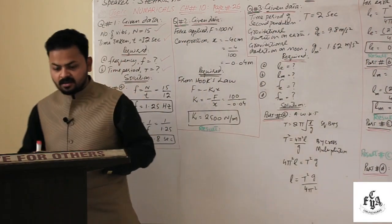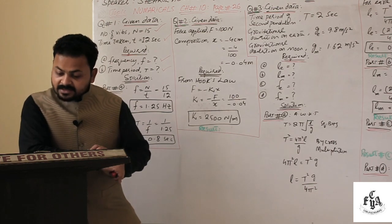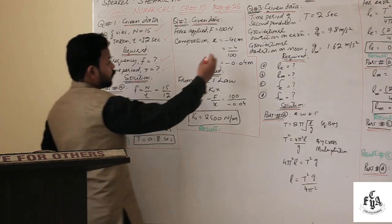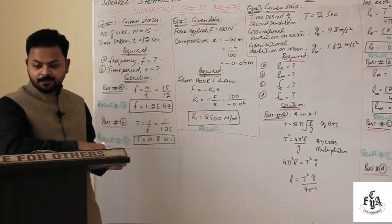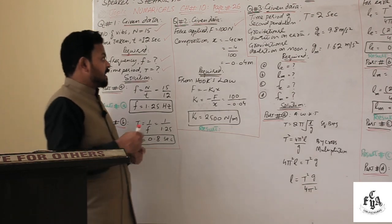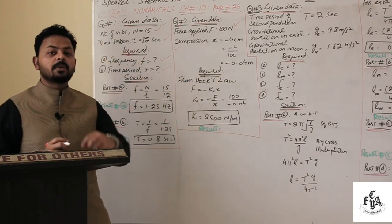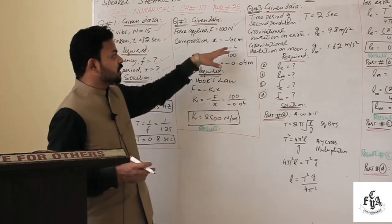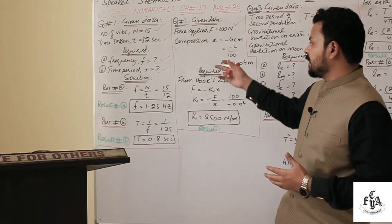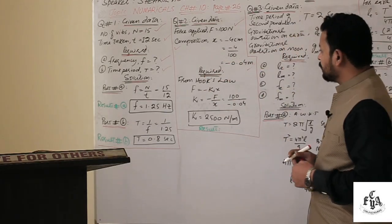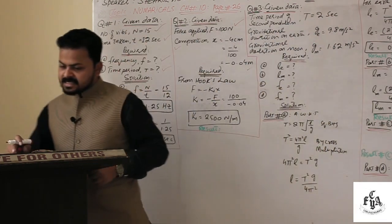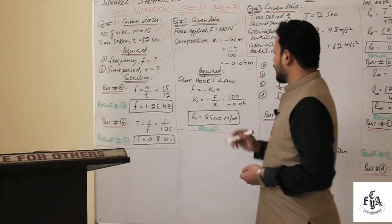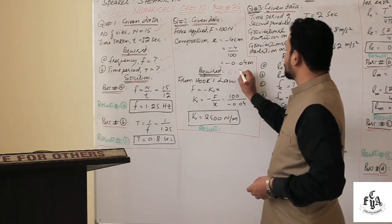Now the second numerical: a spring requires a force of 100 newtons to compress it to a displacement of 4 centimeters. Note we use a minus sign for compression, so displacement is −4 cm. Converting to meters by dividing by 100 gives −0.04 meters. We need to find the spring constant k.